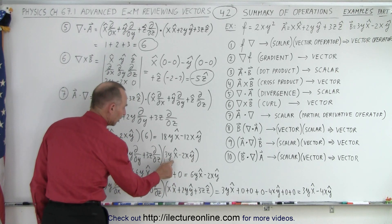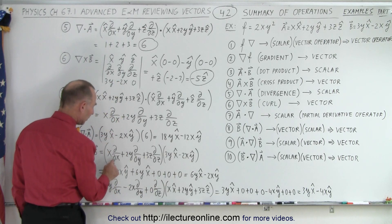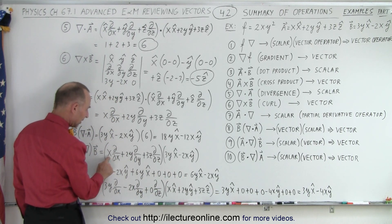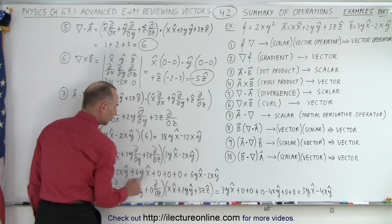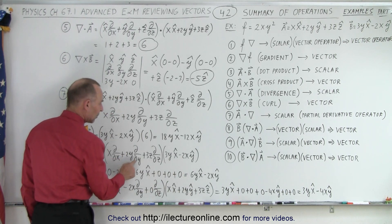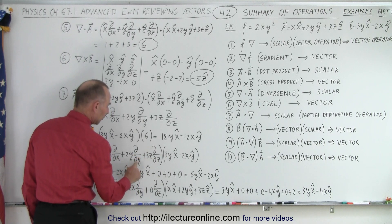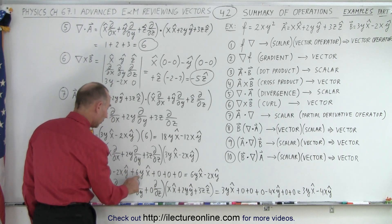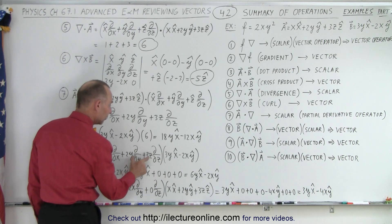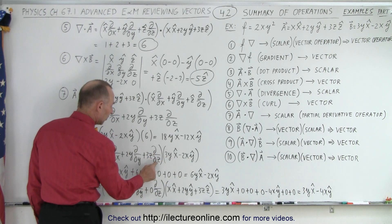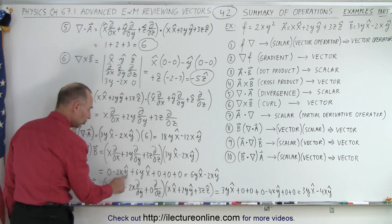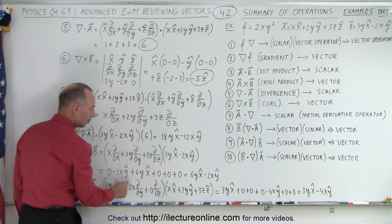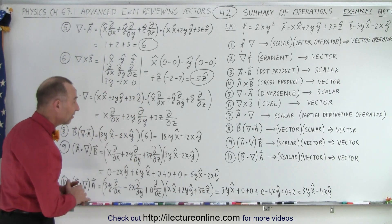We operate each partial derivative term on each component of B. The partial derivative with respect to x on the first component is 0, and on the second component gives minus 2, multiplied by x, so we have minus 2x in the y direction. Taking the partial with respect to y of 3y gives 3, times 2y gives plus 6y in the x direction, and operating on the second term gives 0. The partial derivatives with respect to z give 0 twice. So we end up with two surviving terms: 6y in the x direction minus 2x in the y direction. That's example number 9.